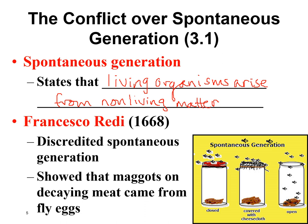Our next scientist you should know is Francesco Redi. He was an Italian scientist also working in the 1600s, and he discredited the idea of spontaneous generation for larger organisms. He took some dead meat and put it into jars. One jar he left open so flies could come in, lay their eggs on the meat, and after a couple of days maggots would appear. The other jar he covered with a lid so flies couldn't get in, and no maggots appeared.